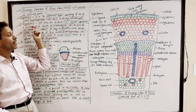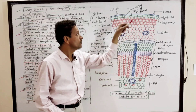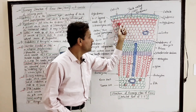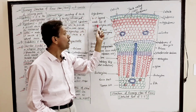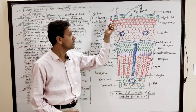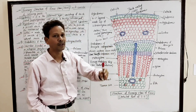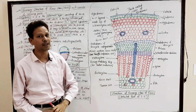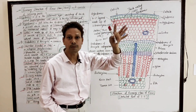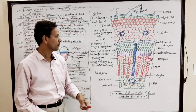Next layer is hypodermis. Just below this epidermis, this 4 to 5-layered hypodermis is present. And this hypodermis is made up of sclerenchymatous cells, which provides mechanical support to the tissue.